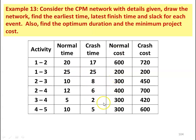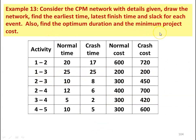The normal costs are 600, 200, 300, 400, 300, and 300. The crash costs are 720, 200, 450, 700, 420, and 600. Activity 1-3 cannot be crashed based on the conditions. In this example, the indirect cost is not given, so we take indirect cost equal to 0. We consider only the direct cost to calculate the total cost of the project work.